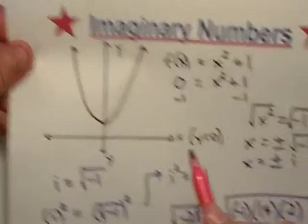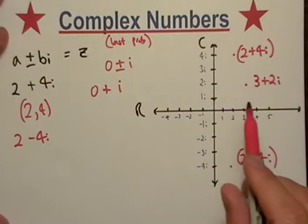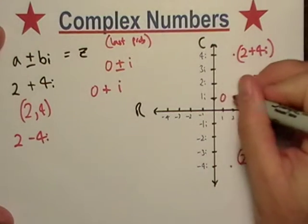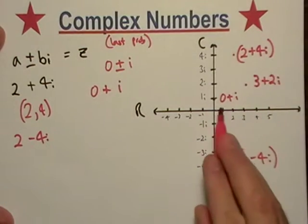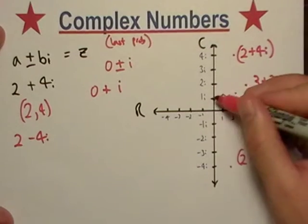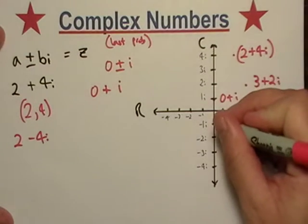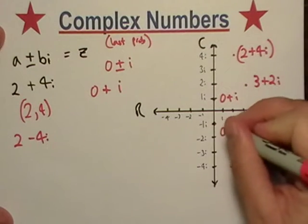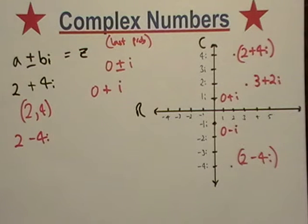So kind of looking at this on the complex number system, this point right here would be our solution. And likewise, we'd also have the solution down there as well. So that's kind of how that works.